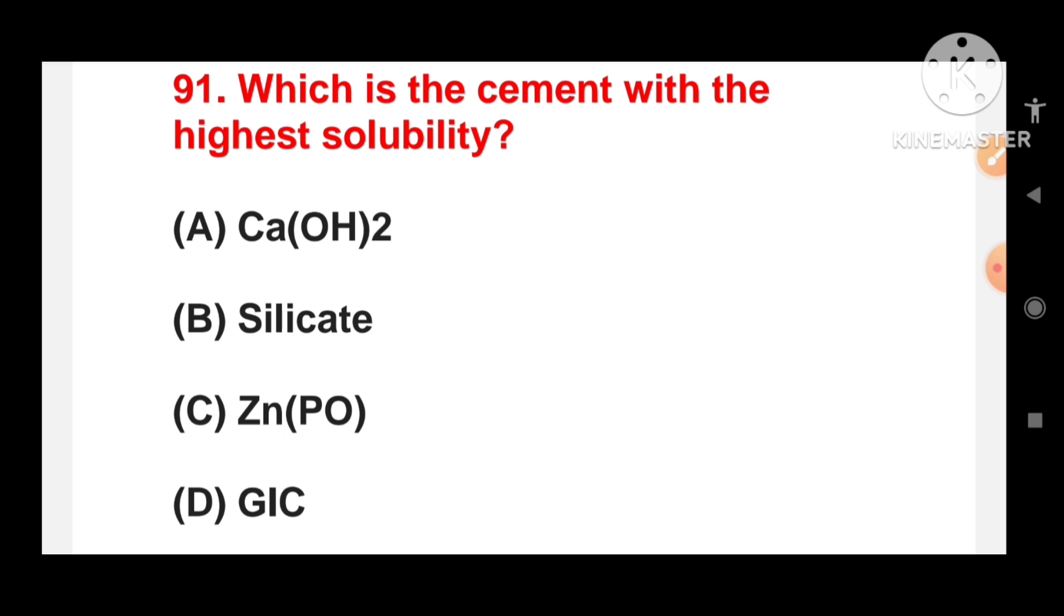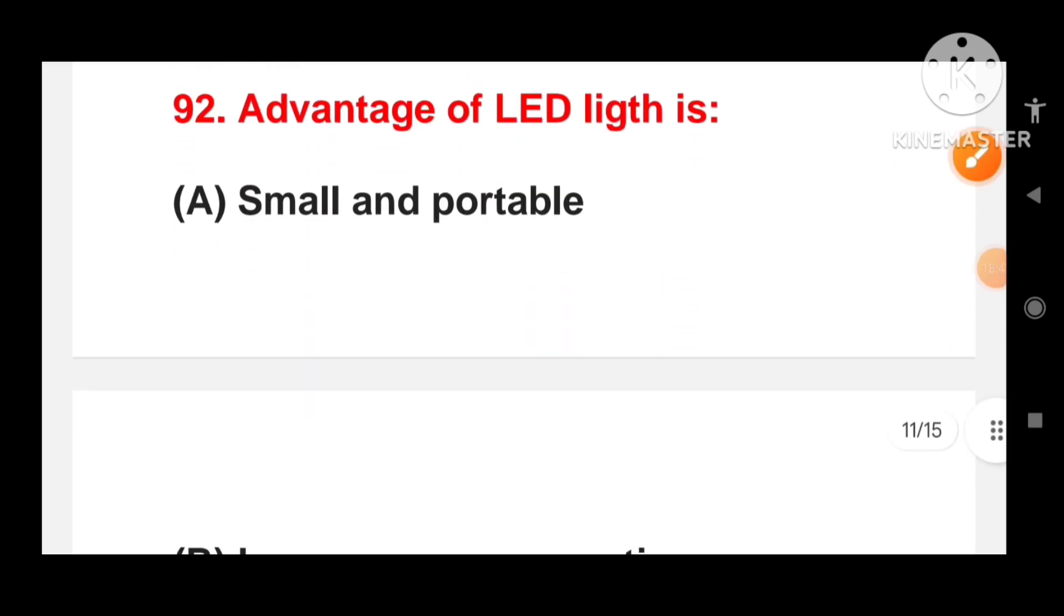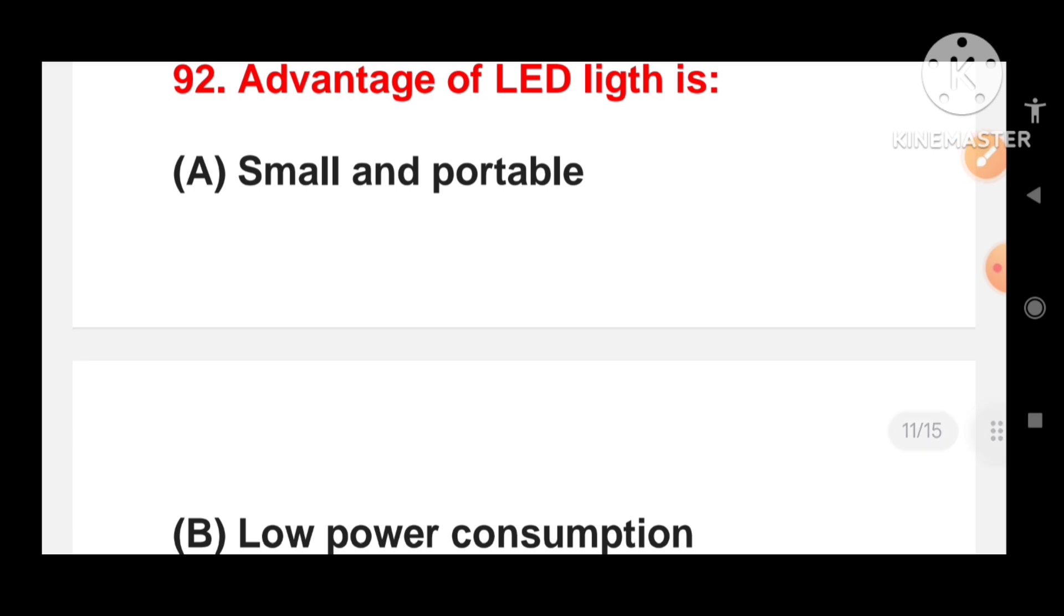Which is the cement with the highest solubility? Options are calcium hydroxide, silicate, zinc phosphate or GIC? The correct answer for this question is silicate cement has the highest solubility. Silicate cements are more soluble in oral fluids compared to other types of dental cement like calcium hydroxide, zinc phosphate or glass ionomer.